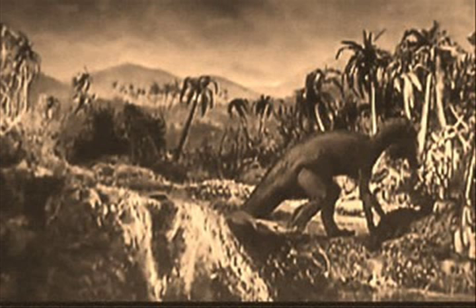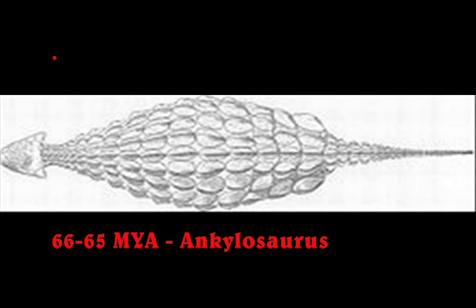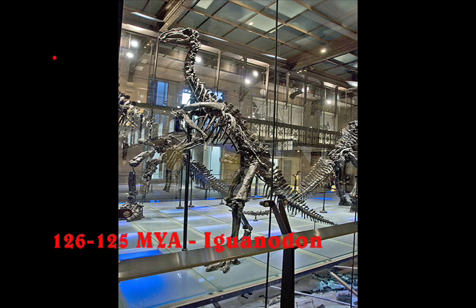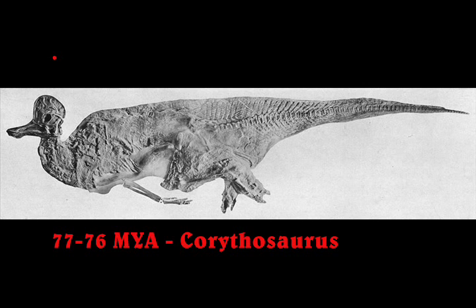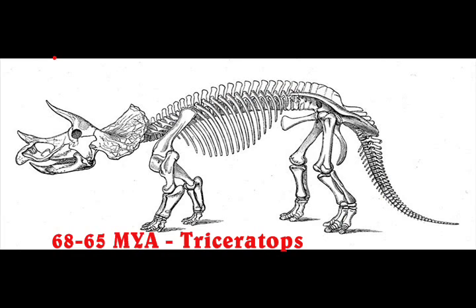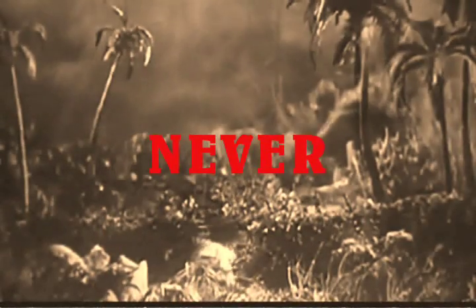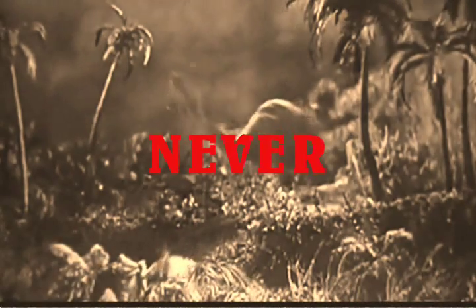The parallel pubis bone dinosaurs split further, with one group giving rise to Stegosaurus and Ankylosaurs, a second giving rise to dinosaurs such as the Iguanodon, while a third group gave rise to Triceratops and the Pachycephalosaurs. Humans and dinosaurs never lived at the same time.